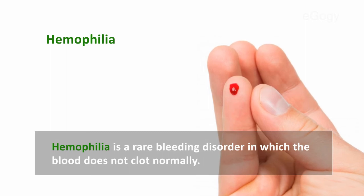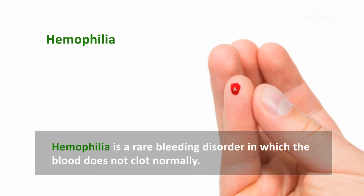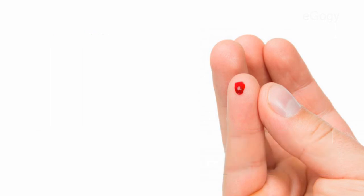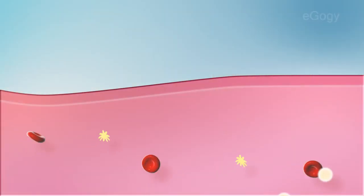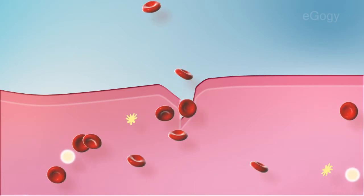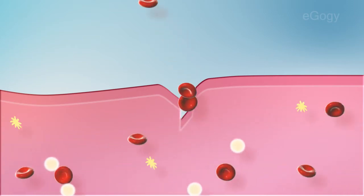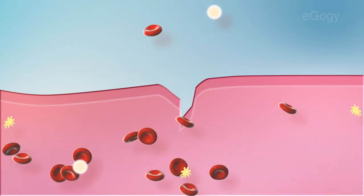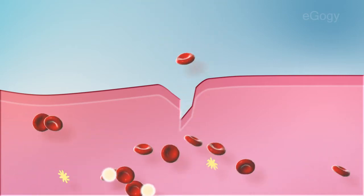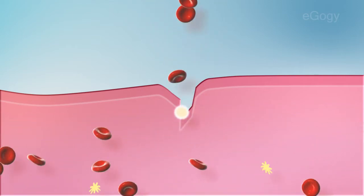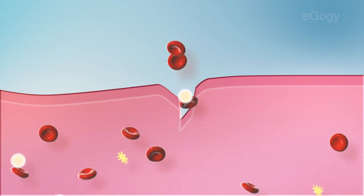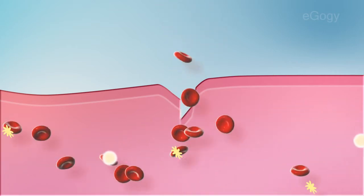Hemophilia is a rare bleeding disorder in which the blood does not clot normally. Even small wounds can cause severe blood loss that may lead to death. This disease is due to a gene mutation in the sex chromosome. It is also known as Royal Disease and Bleeder's Disease.